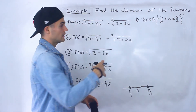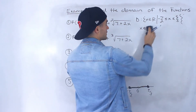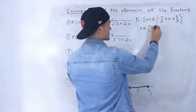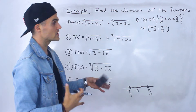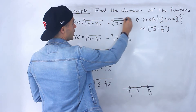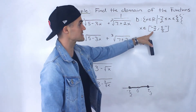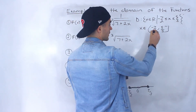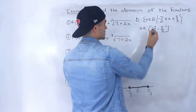Writing it out, the domain is x ∈ ℝ where x is greater than or equal to negative seven over two but less than or equal to five over three. In interval notation, x is an element from negative seven over two to five over three with square brackets because it's inclusive of both endpoints. If it weren't inclusive — for example if one of these were in a denominator making it equal zero — we would use a circle bracket instead.